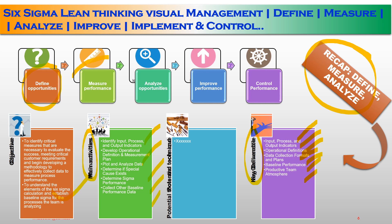In the Measure phase, we identify critical measures necessary to evaluate success in meeting Critical Customer Requirements, develop methodology to effectively collect data, measure process performance, understand elements of the Six Sigma calculation, and establish a baseline sigma. Main activities include: identify input, process and output indicators, develop operational definition and measurement plan, plot and analyze data, determine if special cause exists, determine sigma performance, and collect baseline performance data. Key deliverables are input/output process needs, operational definition, data collection plan, baseline performance, and productive team atmosphere.